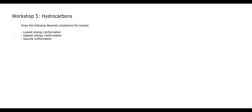Moving on to the next problem, we have a Newman projection problem. We have to draw Newman projections for butane — a four-carbon chain — looking down the C2–C3 bond. We number the carbons one, two, three, four, and we are looking down that C2–C3 bond. You could draw Newman projections down any C–C bond, between C1–C2 or C3–C4, but for this question it's the C2–C3 bond.